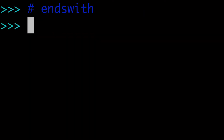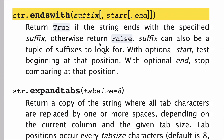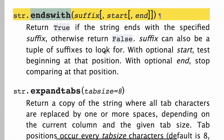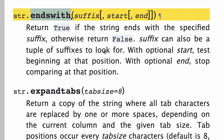So in this video, we've looked at a lot of stuff. We've looked at using the suffix as either a string or a tuple. We've looked at the start and end optional arguments. We've looked at some practical examples with emails and whatnot. I hoped you enjoyed this video. This is the endswith string method in Python. Thanks so much for watching.